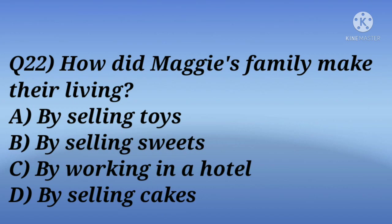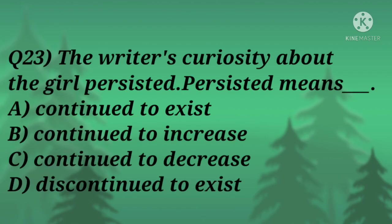Question 22: How did Maggie's family make their living — by selling toys, by selling sweets, by working in a hotel, or by selling cakes? The correct answer is by selling cakes. Question 23: 'The writer's curiosity about the girl persisted.' Here 'persisted' means — continue to increase, continue to decrease, discontinue to exist, or continue to exist? The answer is continue to exist.